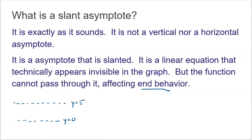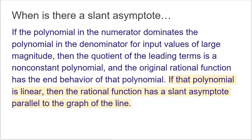The only other scenario is if the numerator degree is bigger than the denominator degree — and when that happens, you have a slant asymptote. The official definition: if the polynomial in the numerator dominates the polynomial in the denominator, meaning the degree in the numerator is larger, then the quotient of the leading terms is a non-constant polynomial.